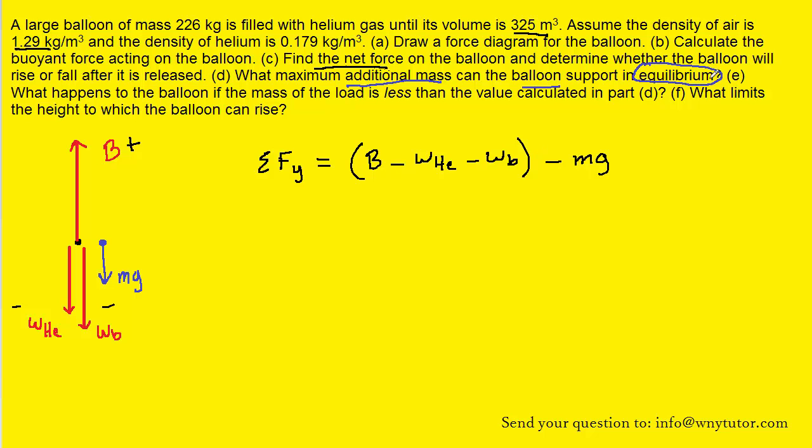Also notice that because the balloon is now in equilibrium the sum of the forces will equal zero. That is the definition of equilibrium in fact. So this will be relatively easy to solve for the unknown mass m here. Why don't we add mg over to the other side? And then we can divide both sides of the equation by g and that way we're going to isolate the unknown mass.